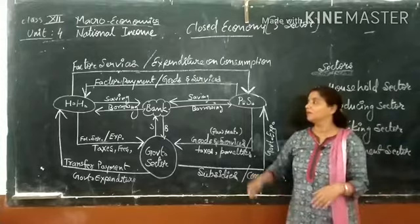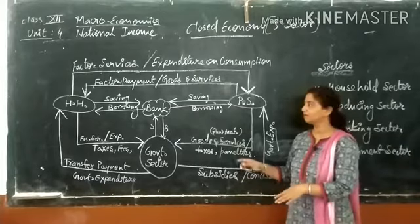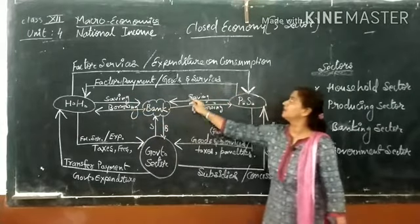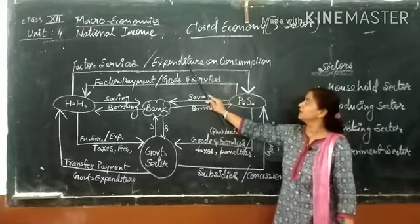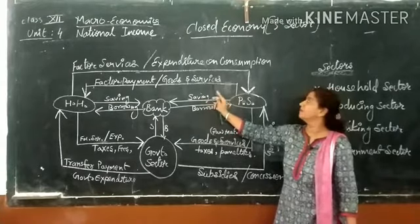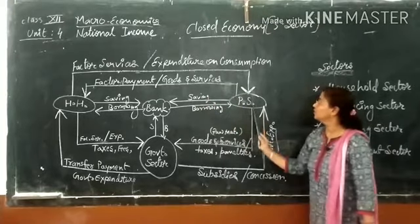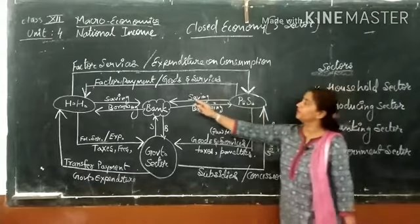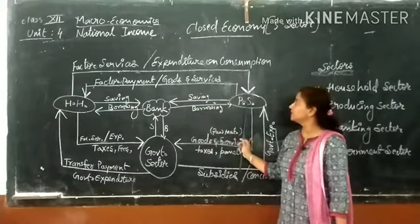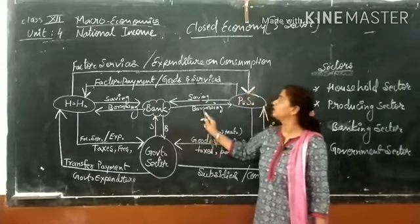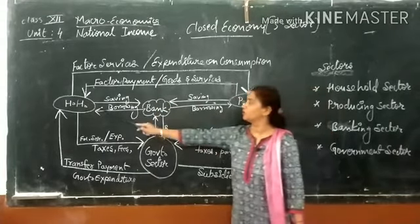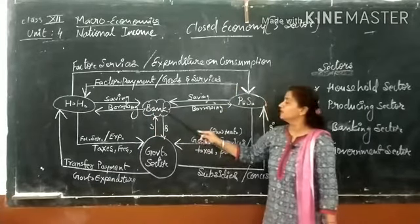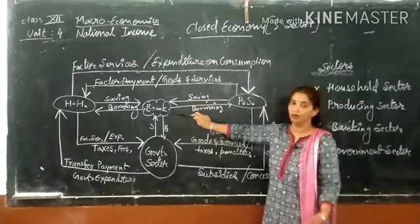In closed economy, household sector provides factor services and spends money on consumption. The producing sector in return provides factor payment and goods and services to the household sector. Both household sector and producing sector deal with banks for their saving and borrowing.